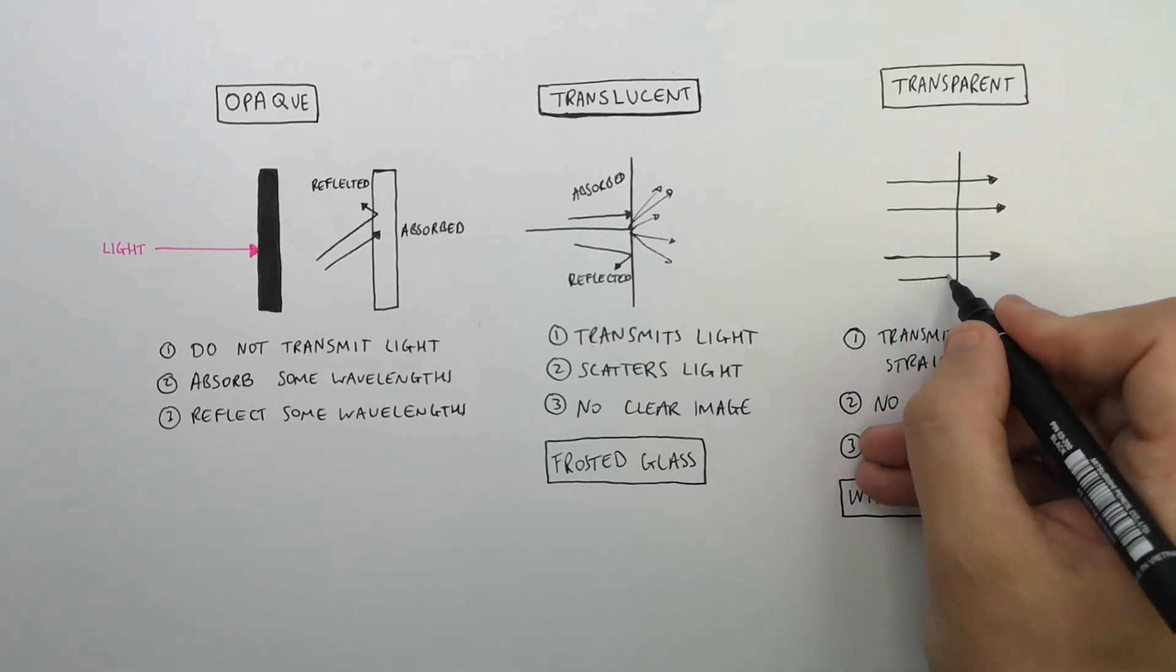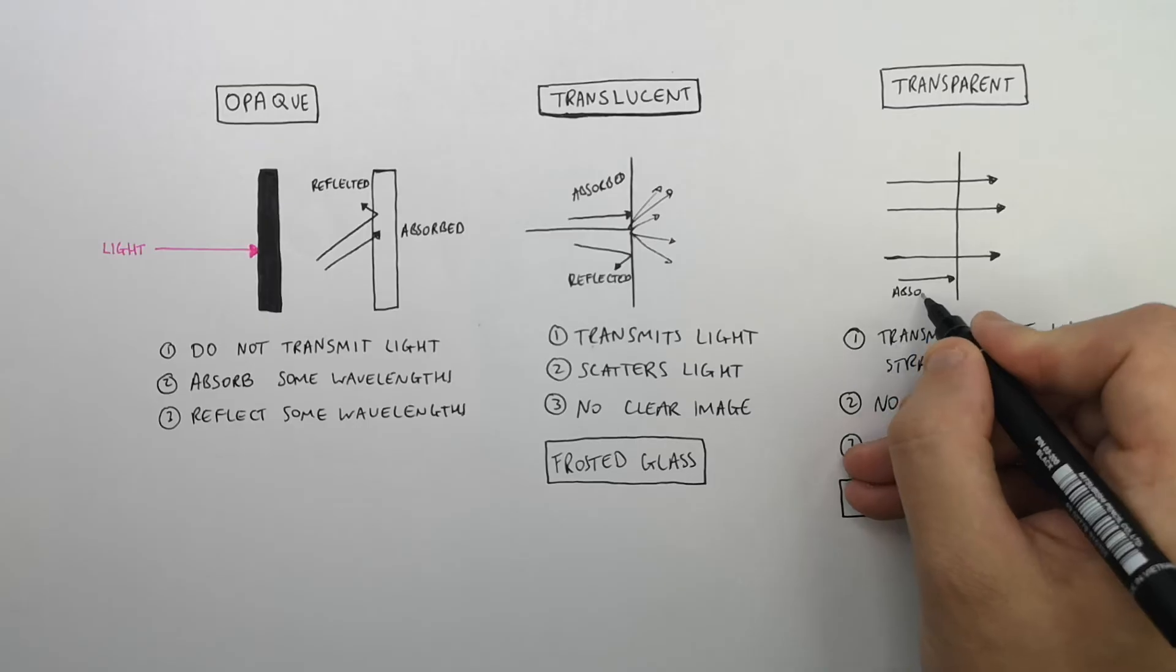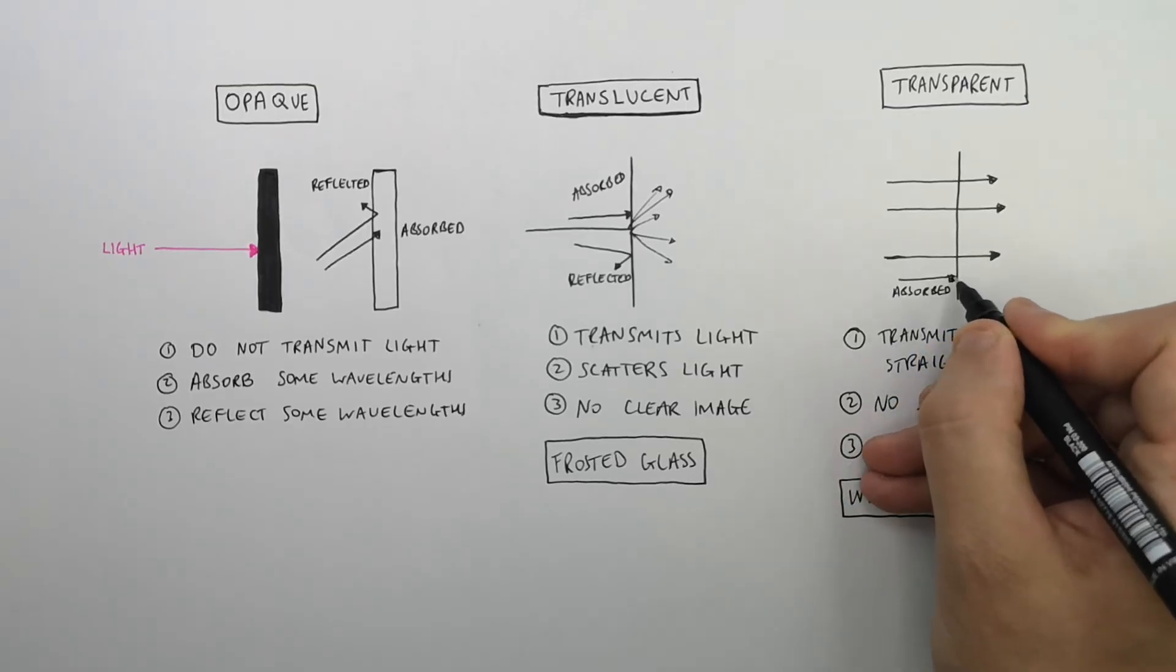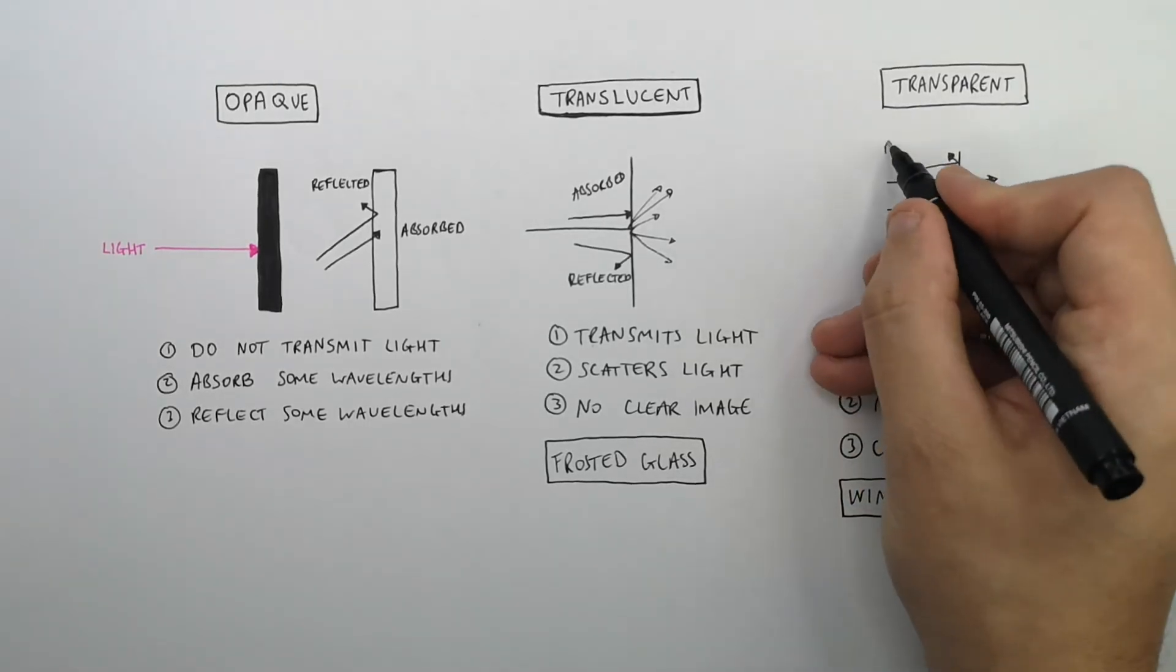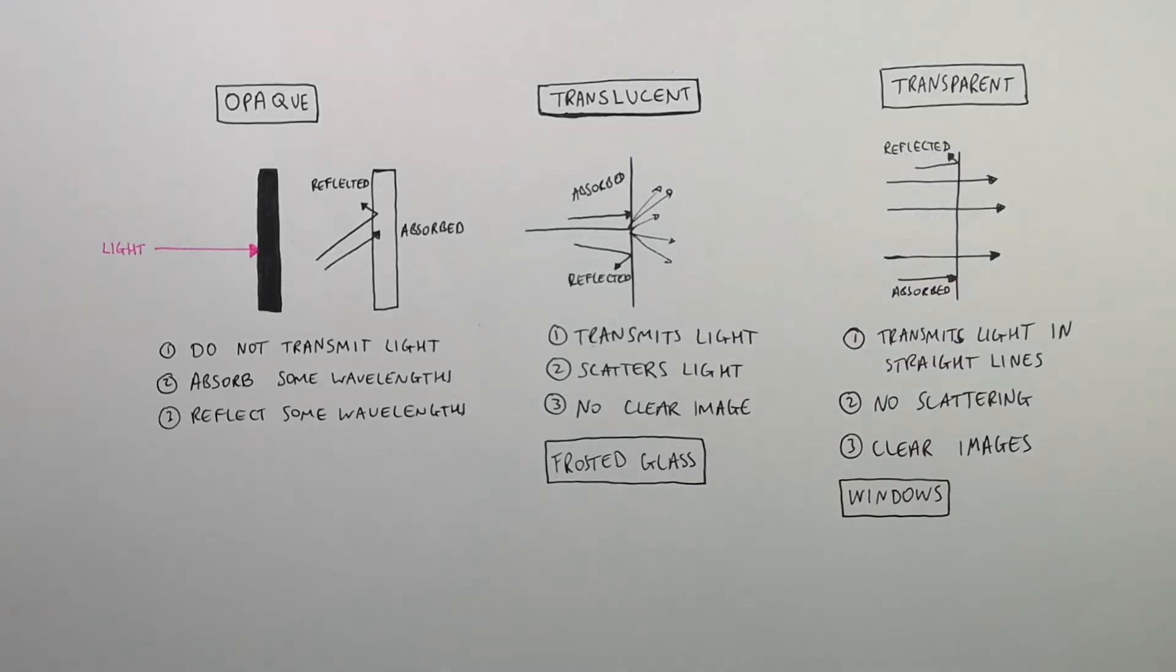And that's the same for transparent glass. Transparent glass will also reflect some wavelengths of light and they will also absorb some wavelengths of light. So glass will not transmit 100% of light.